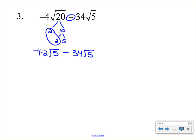So now we just have to simplify that left radical just by multiplying. So negative four times two on the outside gives us negative eight square root of five. Take away thirty-four square root of five. And again, we just combine those. So it's like doing a negative eight plus a negative thirty-four.